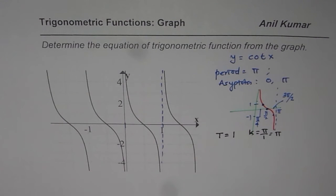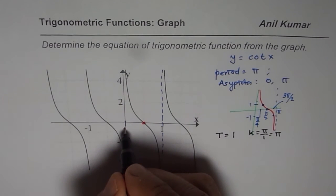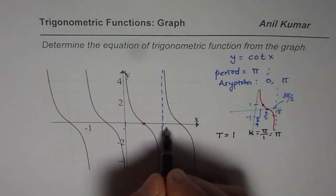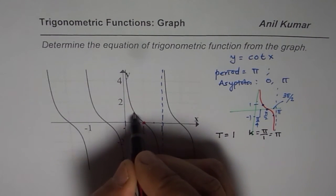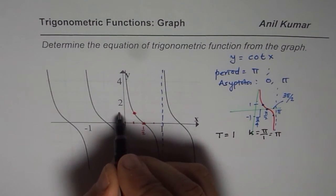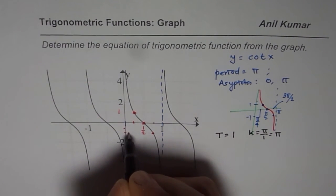Now the second thing is we will consider these three points. We have here 0 to 1, and the quarter of this is kind of here. So at quarter, we check a value which is plus 1 and at 3 quarters, we have a value which is minus 1. This is minus 1.